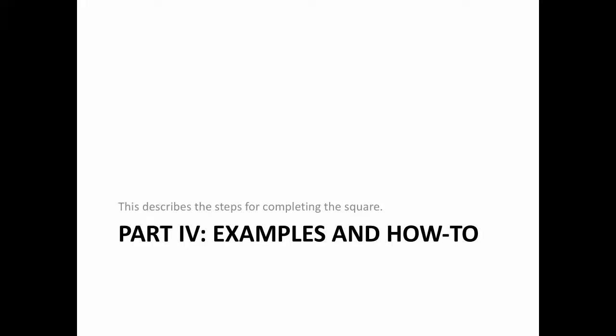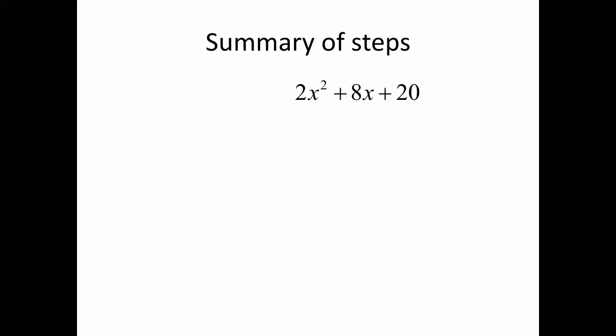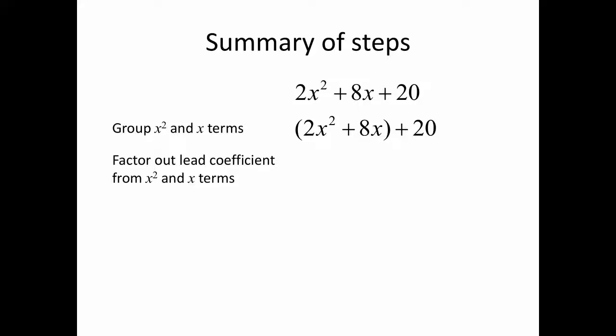Now let's take a look at some examples and how to actually complete the square algebraically. We took the polynomial 2x squared plus 8x plus 20. We grouped the x and x-squared terms, then factored out the lead coefficient — in this case 2 — to create 2 times x squared plus 4x, plus a blank space.